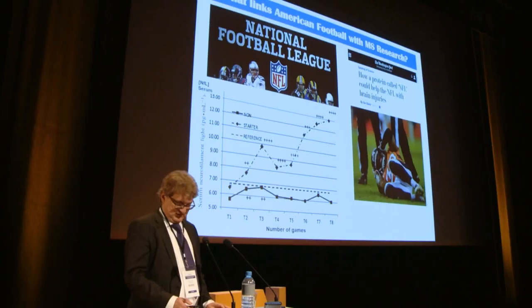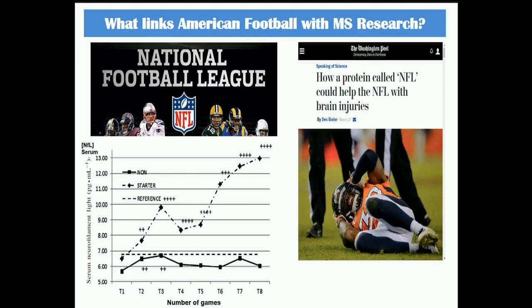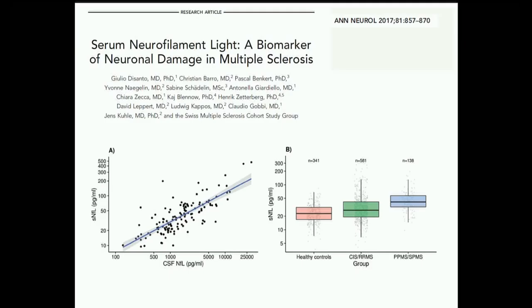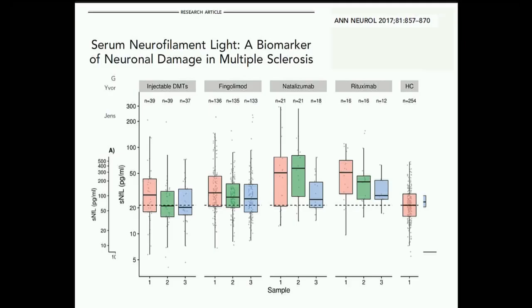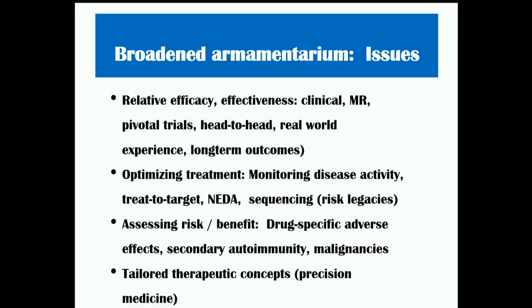An interesting aside: NFL also stands for National Football League, and football players — depending on their position and bodily contact — have elevated NfL levels in their blood. Recent data emphasize the potential of serum neurofilament light to serve as a biomarker of neuronal damage in MS and also as a partial response marker of immunomodulatory treatment.